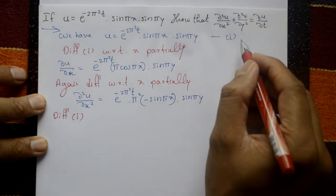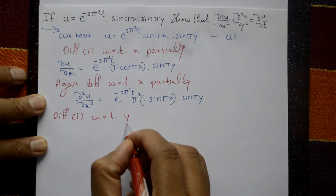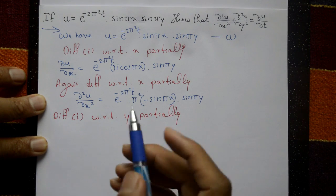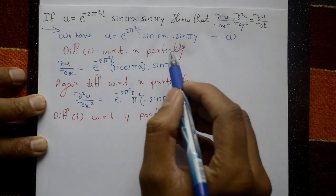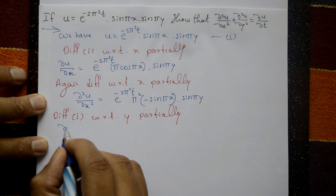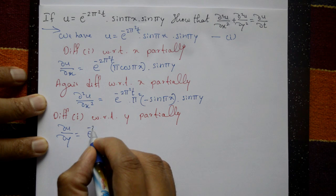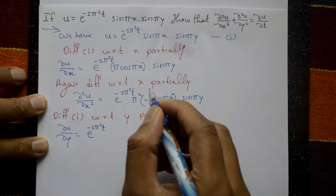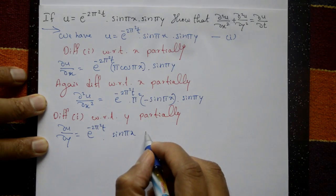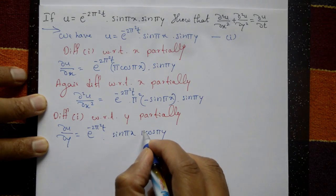Now differentiate equation number 1 with respect to y partially. x and t are treated as constants. ∂u/∂y: e^(-2π²t) is constant as it is, sin(πx) is constant as it is, differentiate sin(πy) to get cos(πy) multiplied by π.